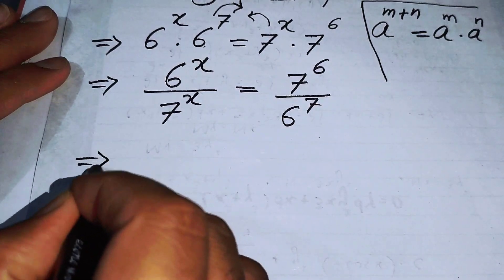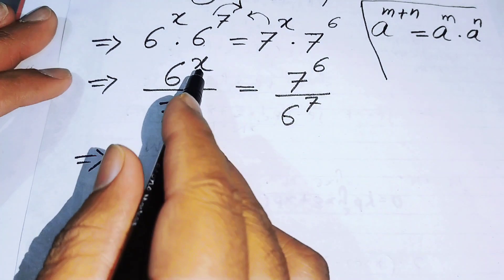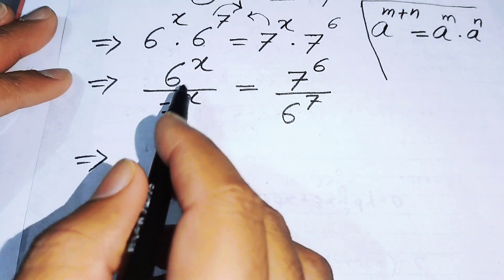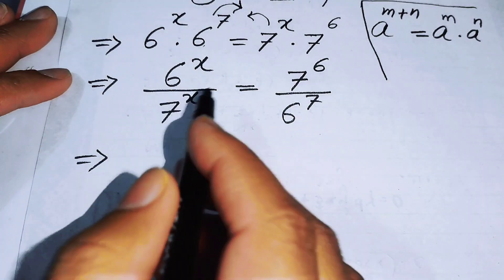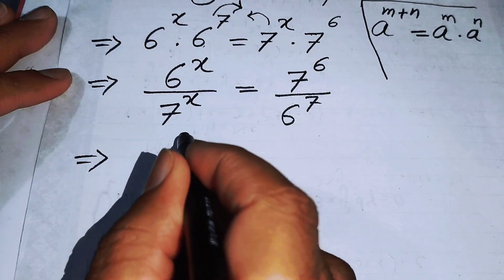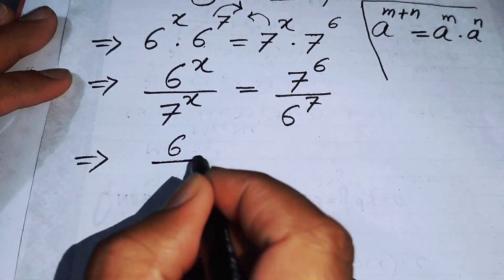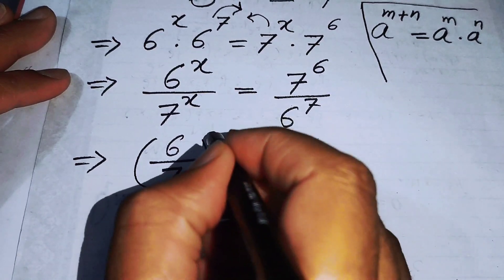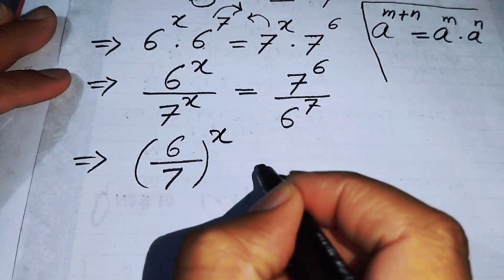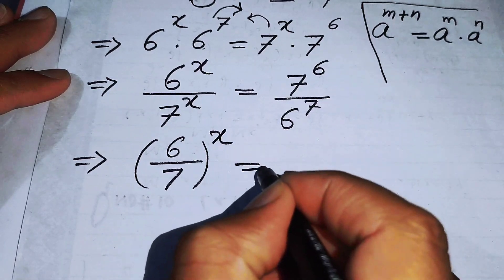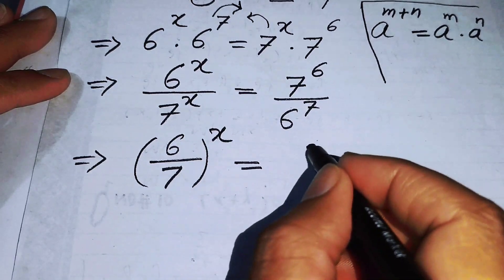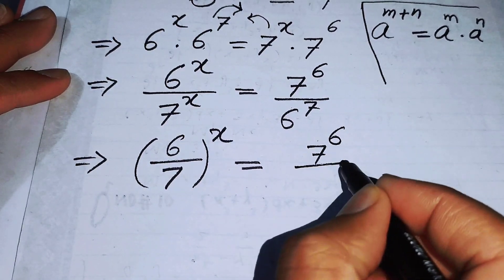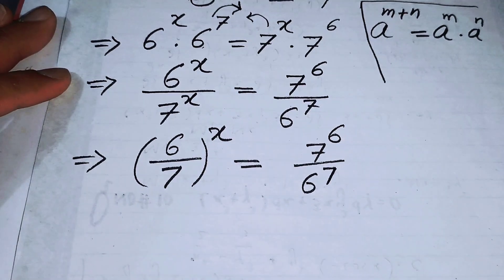After that, we combine the exponents to get a single base form, giving us 6 over 7 to the power of x, equals 7 to the power of 6 over 6 to the power of 7.